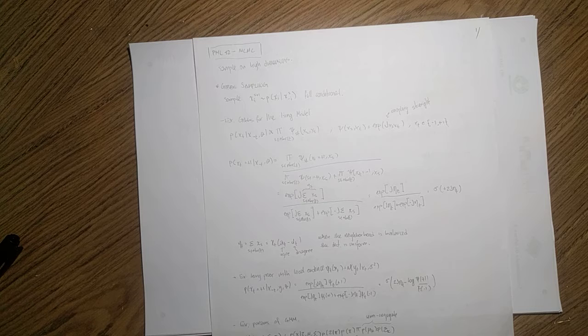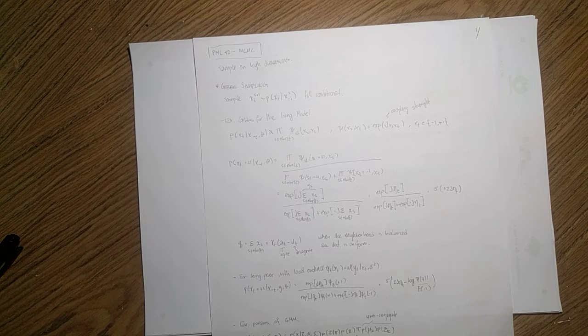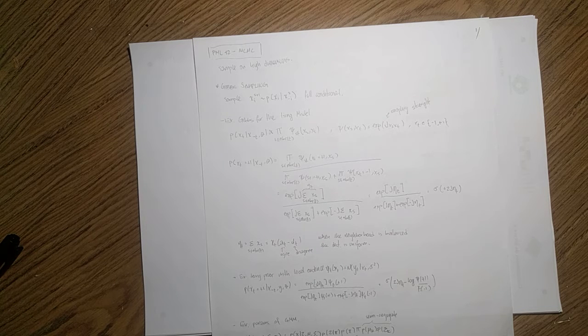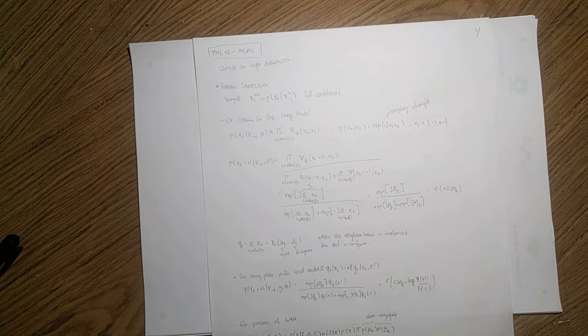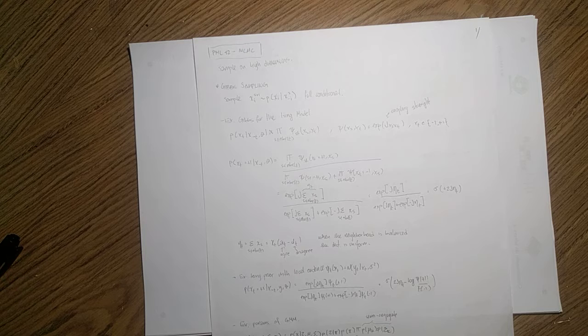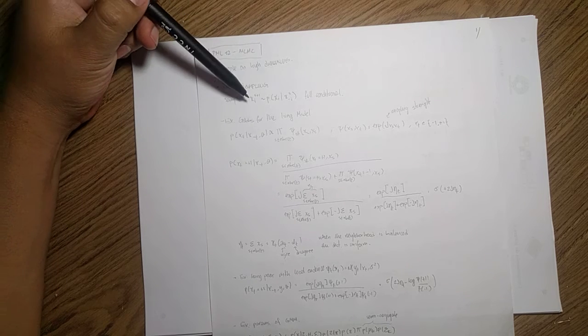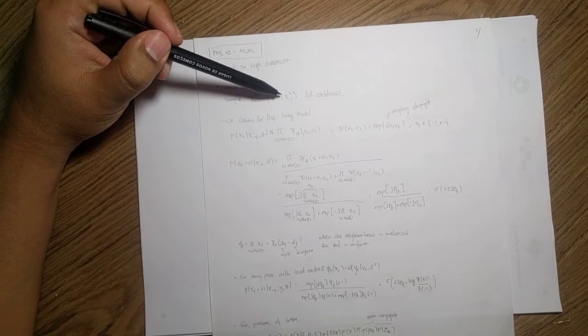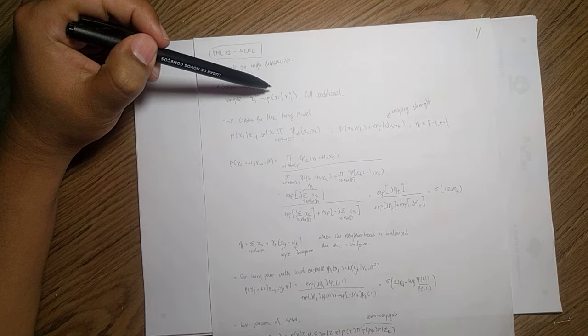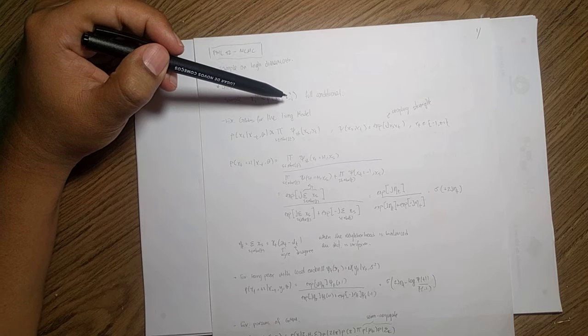One of the most useful methods here is Gibbs sampling. Gibbs sampling is a simple idea that instead of trying to sample in the whole joint space that is really high dimensional, you want to sample on the full conditional. The full conditional is nothing else but the conditional of one of those dimensions given the rest.